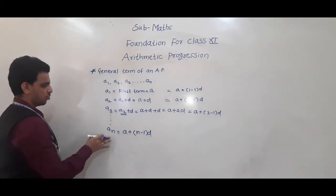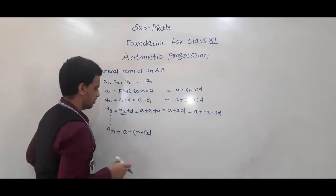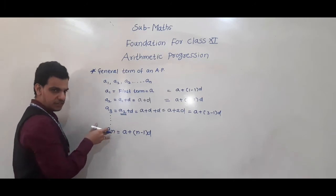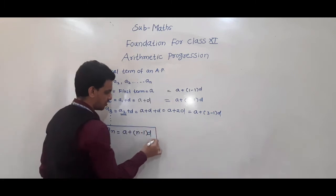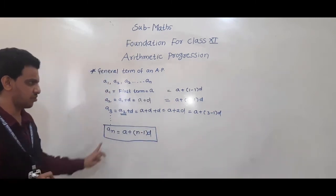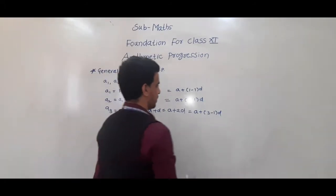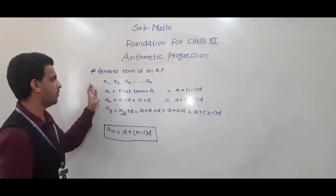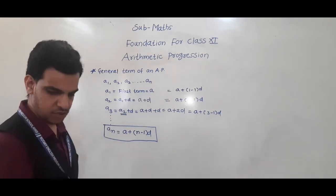So, if the AP is given — meaning the first few terms are given — and we have to find the general term or nth term, we use the formula: an = a + (n−1)d. Now, there is another formula to find the nth term from the end of an AP.